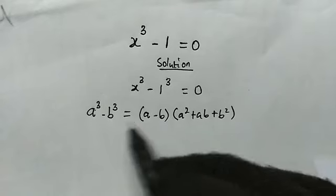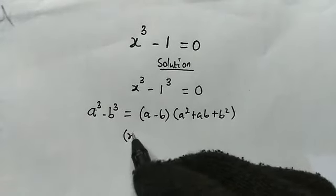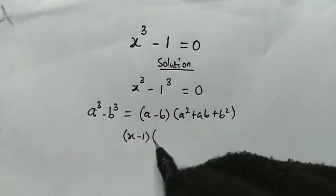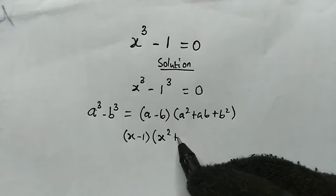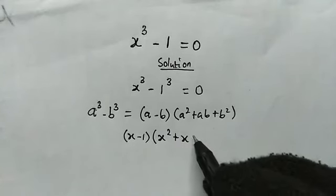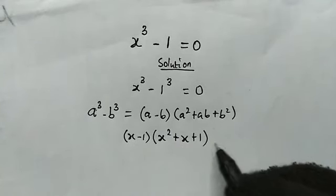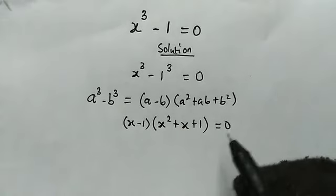So making use of this property, the left hand side will become x minus 1 multiplied by x squared plus x times 1, which is x, plus 1 squared, which is 1, and this is equal to 0.